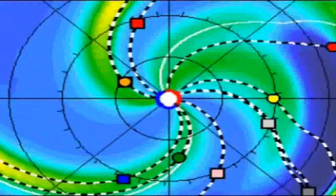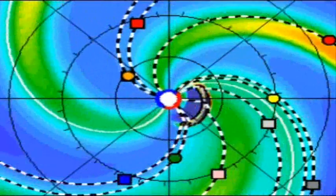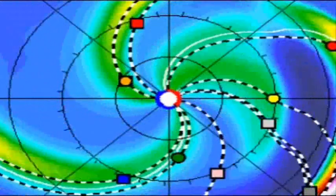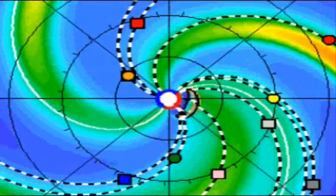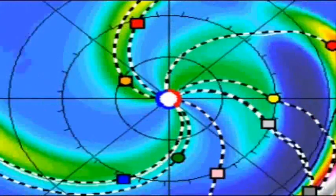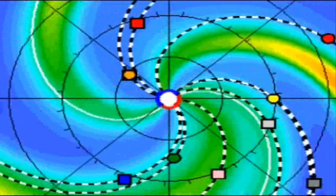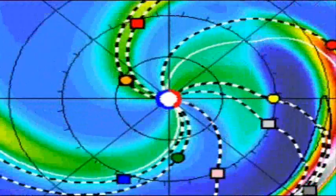Incoming CME: active sunspot 1401 erupted yesterday, January 19th, around 1630 UTC, producing an M3-class solar flare and a full halo coronal mass ejection, CME.